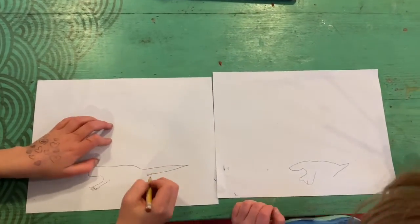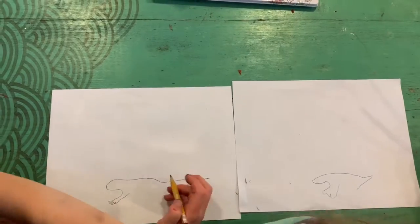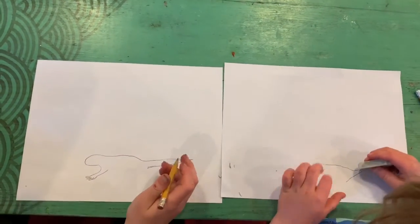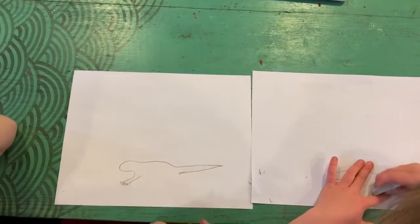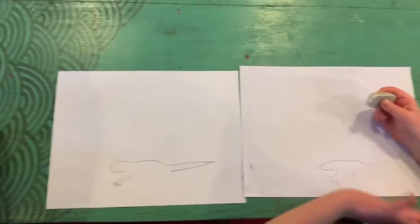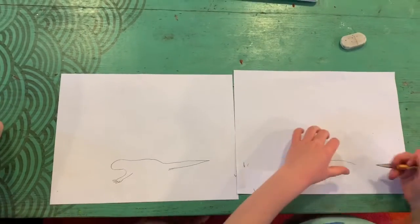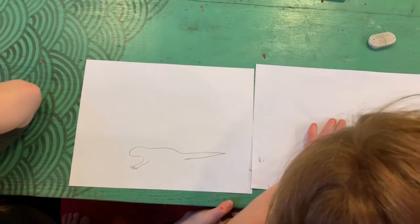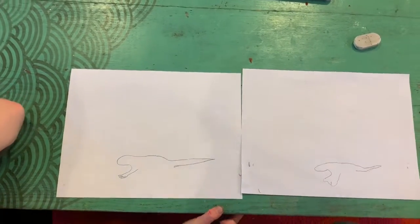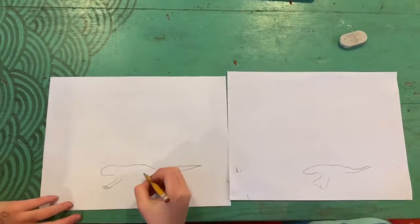Now, since we have the tail, we're going to draw the back leg. Oh, you got something to erase? Okay, let's wait for you to erase. Everyone makes mistakes. Okay, so now let's draw the back leg.